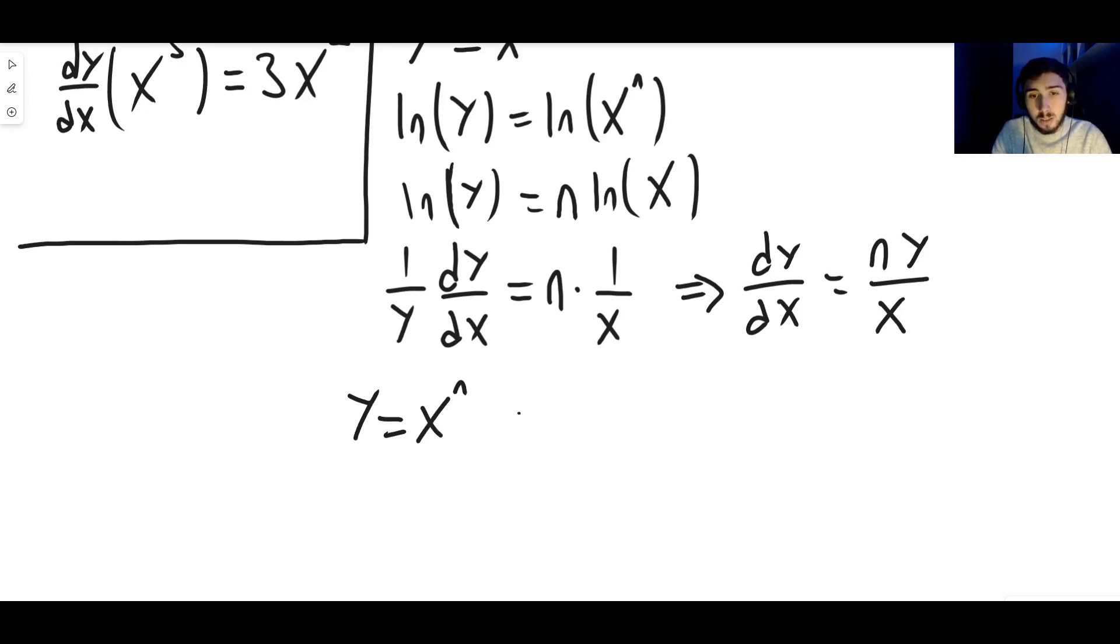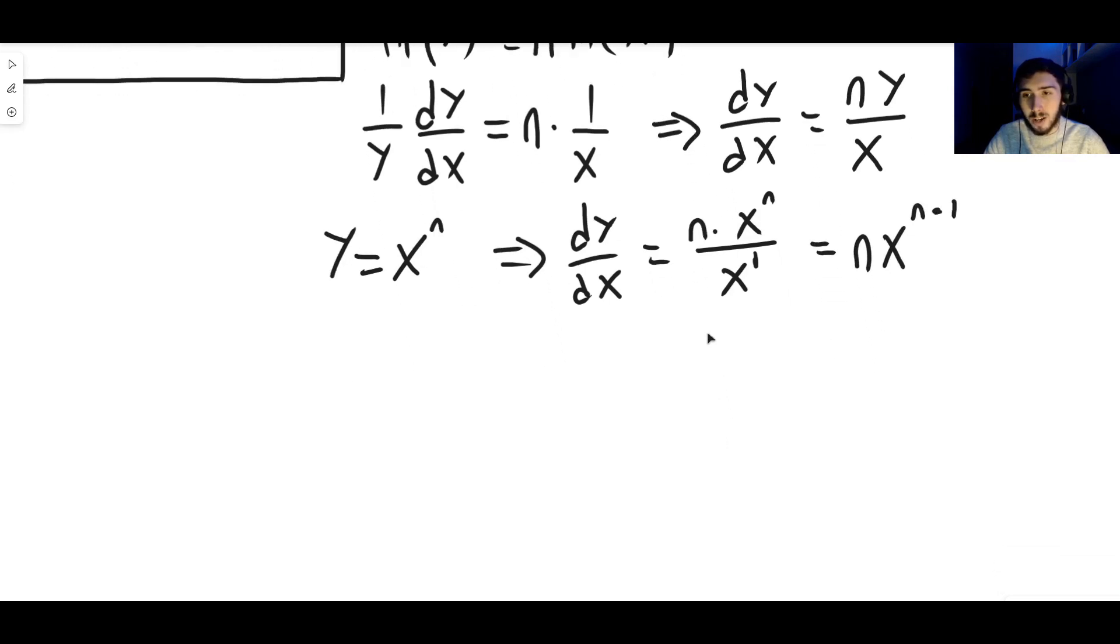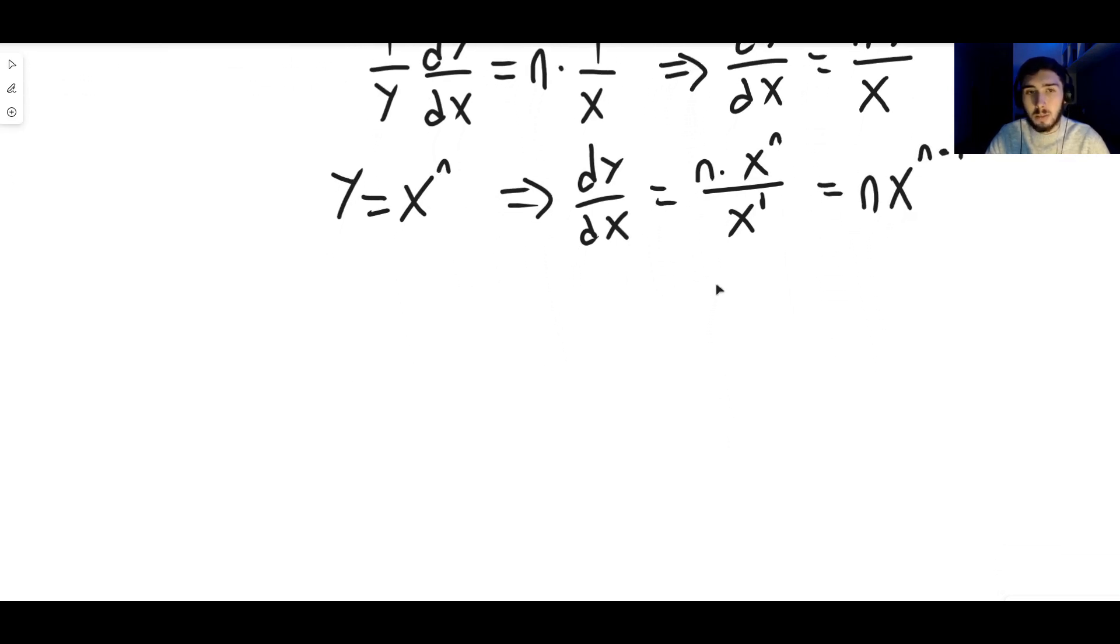That means that we can say dy dx using this guy here. We can say dy dx is equal to n times y, which is x to the n, divided by x. And of course, that's an x to the 1, isn't it? Of course, x is x to the 1, which means again, we can use index laws to say that is equal to n x to the n minus 1. When you divide by something to a power, it turns into a subtraction. So we get n x to the n minus 1.